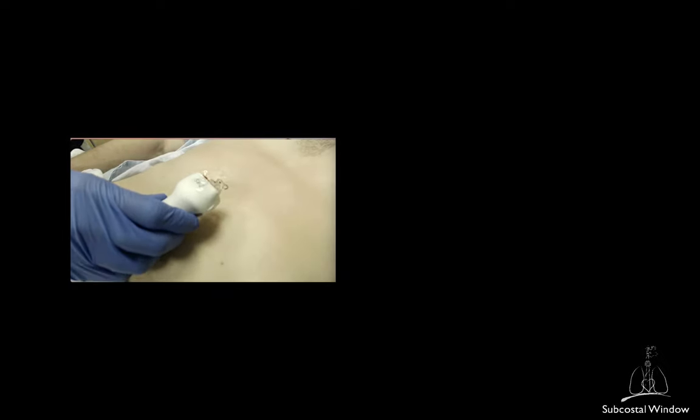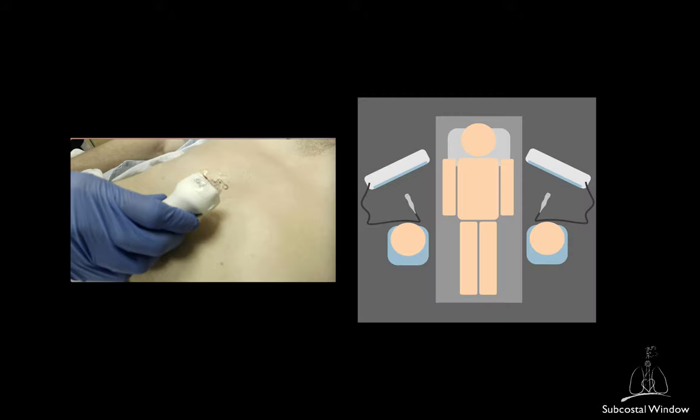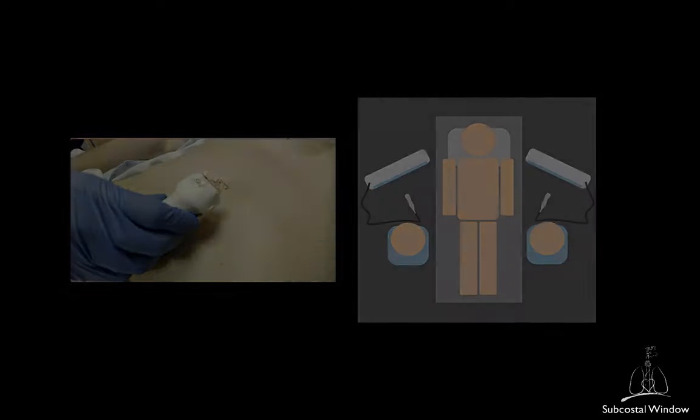To obtain the subcostal view, you will position the patient supine. To facilitate your movement, you should hold the probe from above as if you were holding a screwdriver. You can be standing on each side of the bed, but make sure that the machine is positioned in a way that you can access it to change the settings or do measurements. Also, ensure that you are in a comfortable position with the screen facing you.